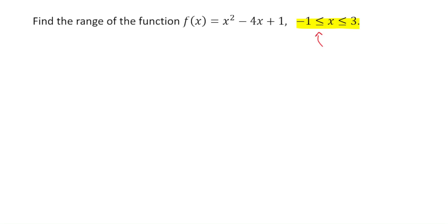The domain is the set of all possible input values, and the range is the set of all possible output values. So the domain is given — the input values are from negative 1 to 3 — and we're asked to find the range, which is all of the possible output values, that is the y values.